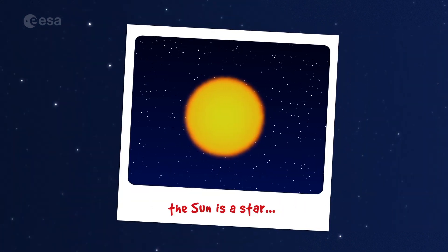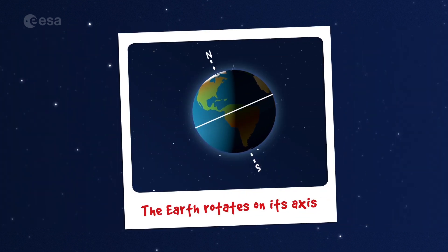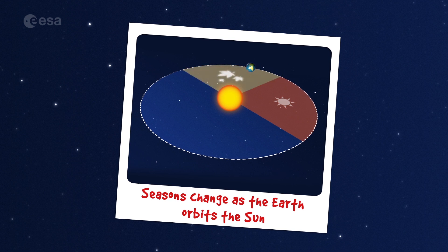We've seen that the sun is a star, that the Earth rotates on its axis, and this gives us day and night, and that the seasons change as the Earth orbits the sun.